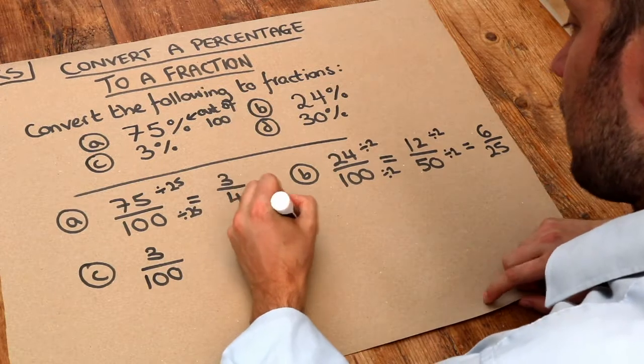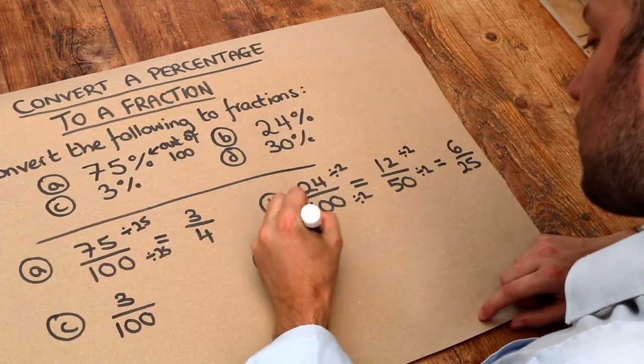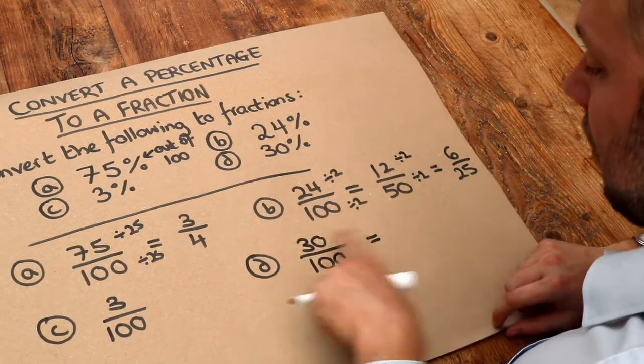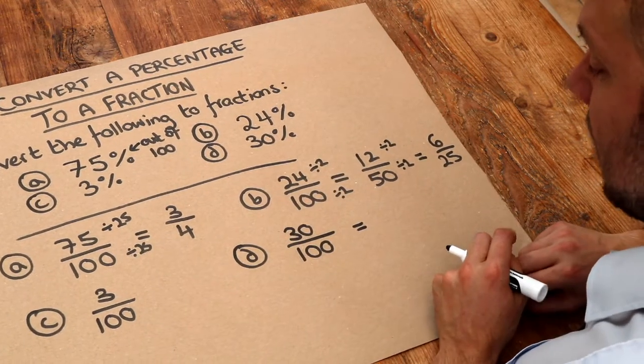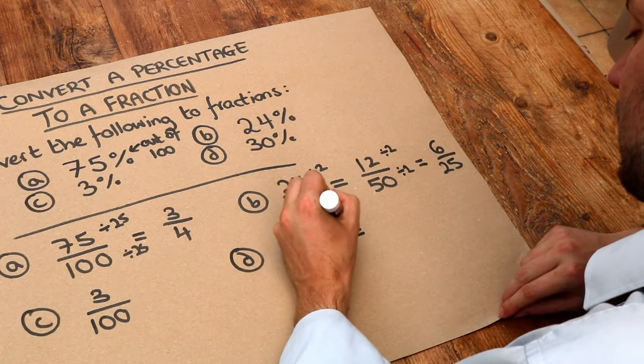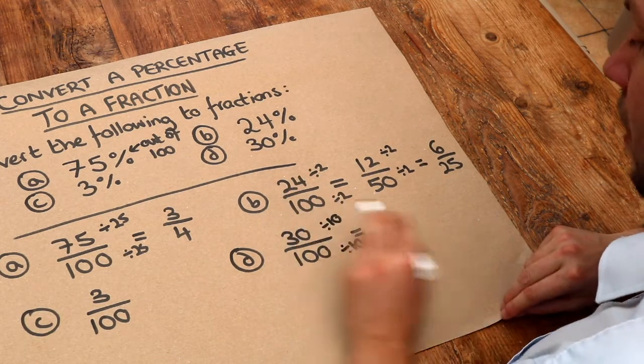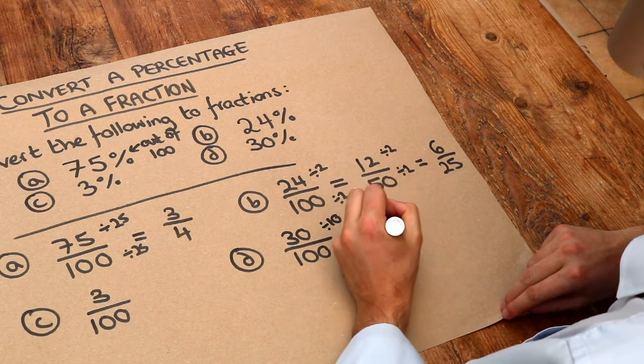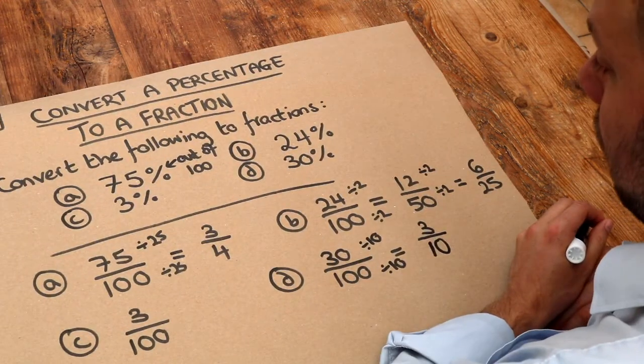And then finally, 30% is 30 out of 100. Now can you see 30 and 100 both divide by 10? So if we divide top by 10, bottom by 10, 30 divided by 10 is 3, and 100 divided by 10 is 10. So we get 3 tenths.